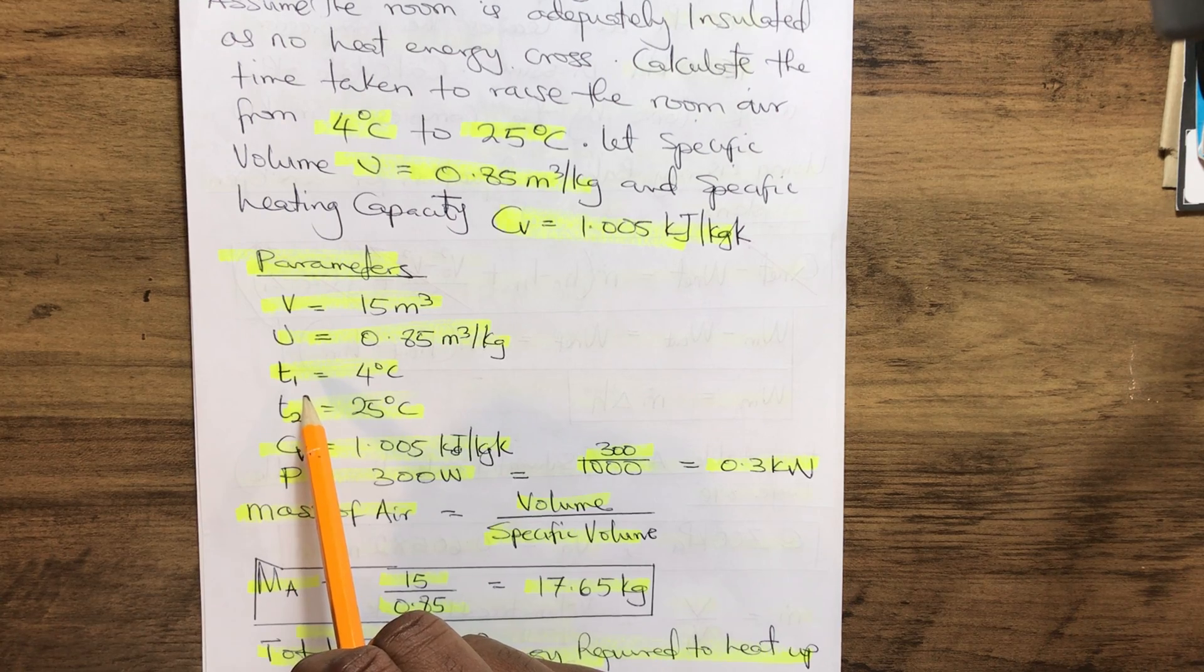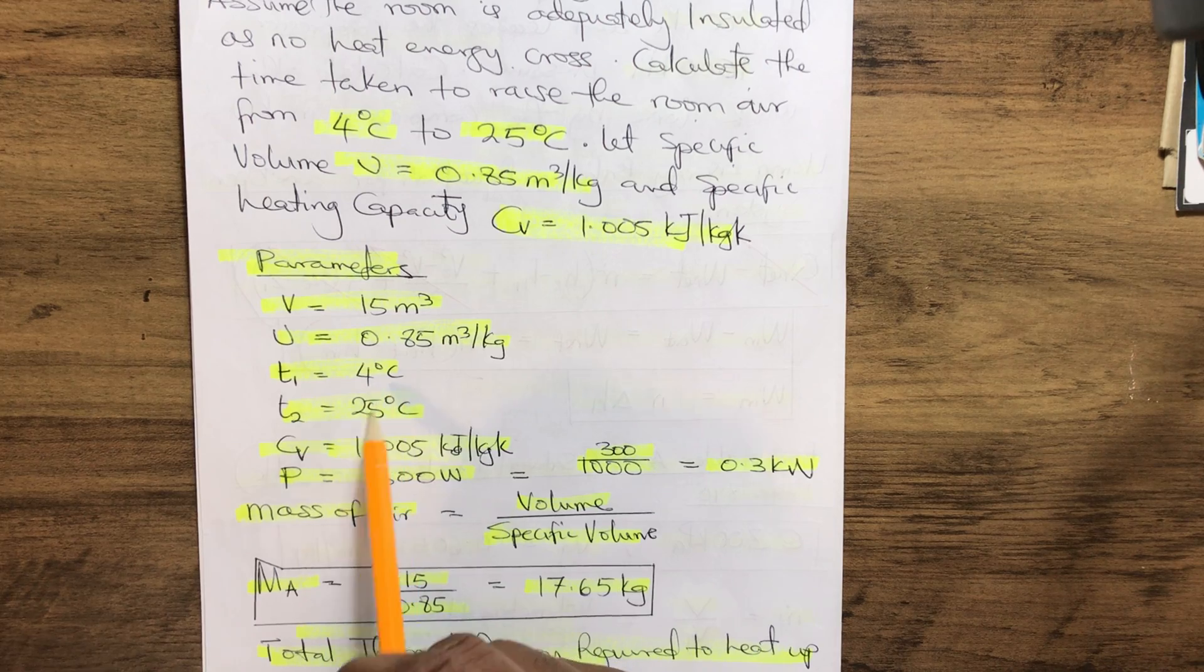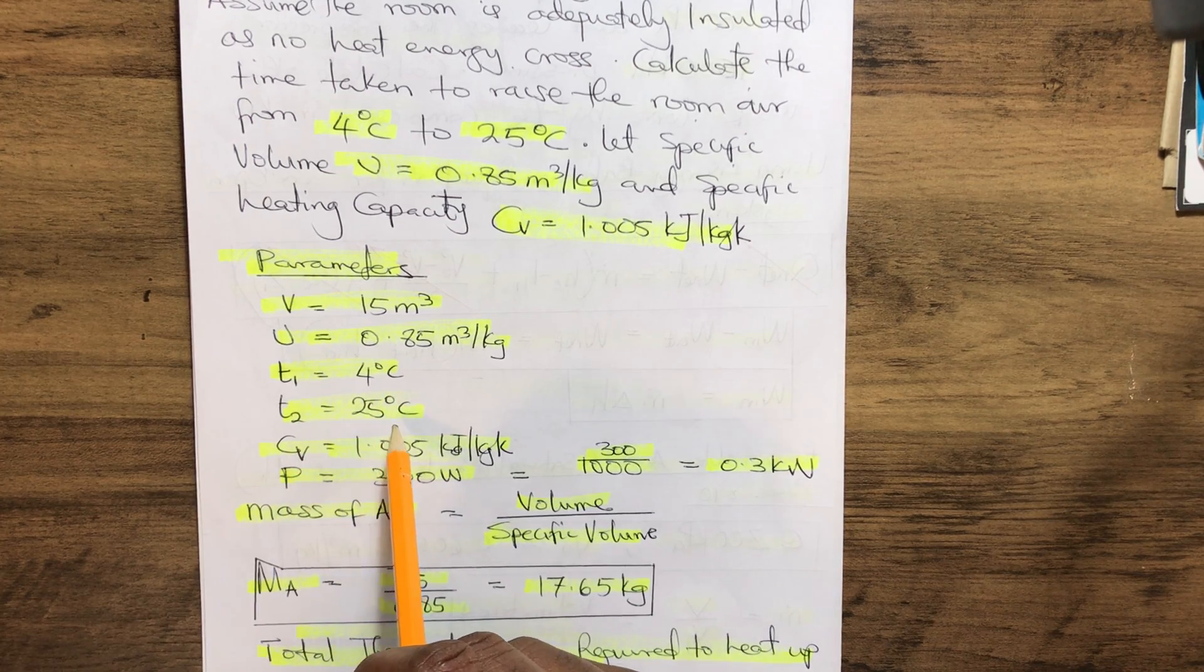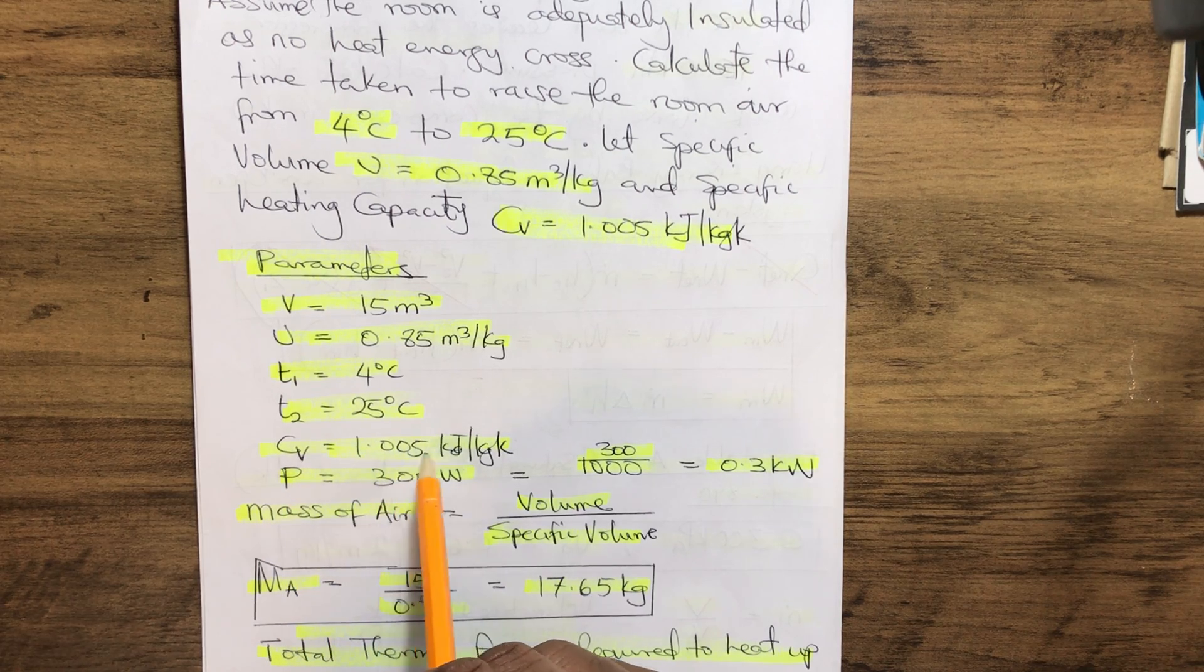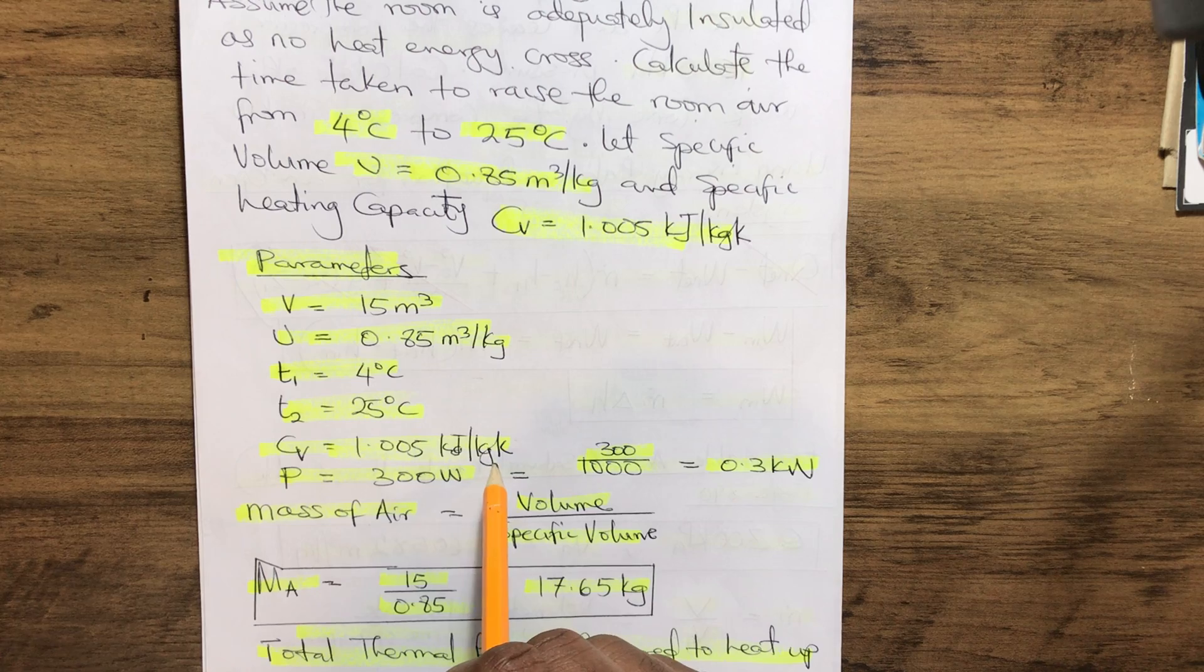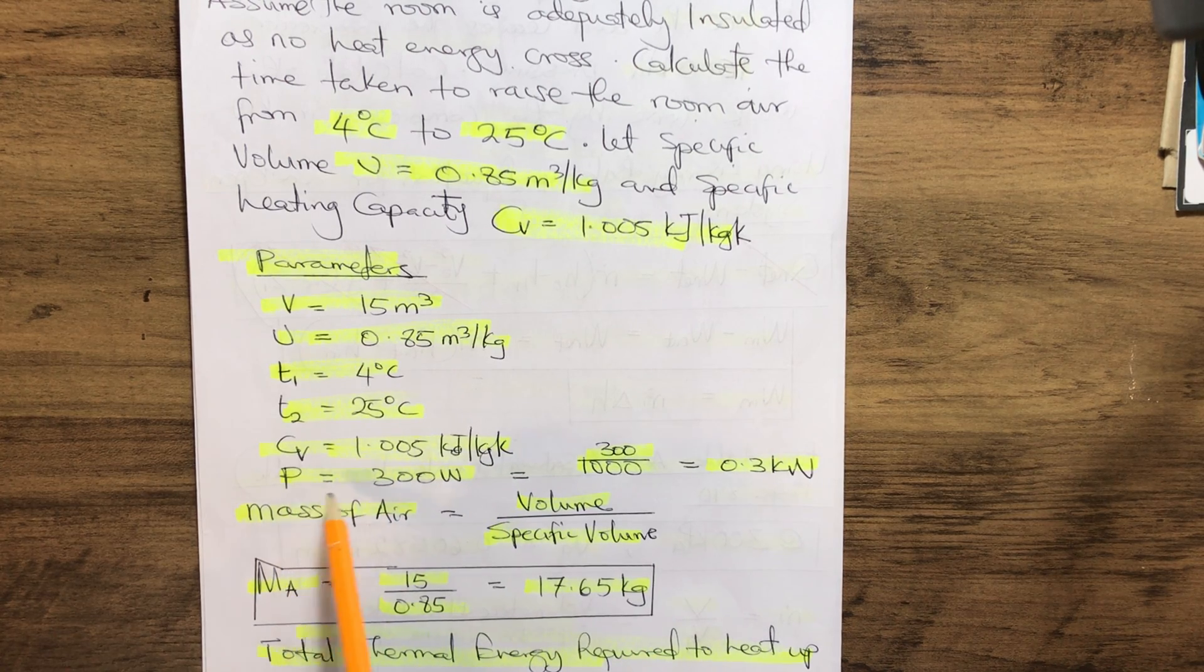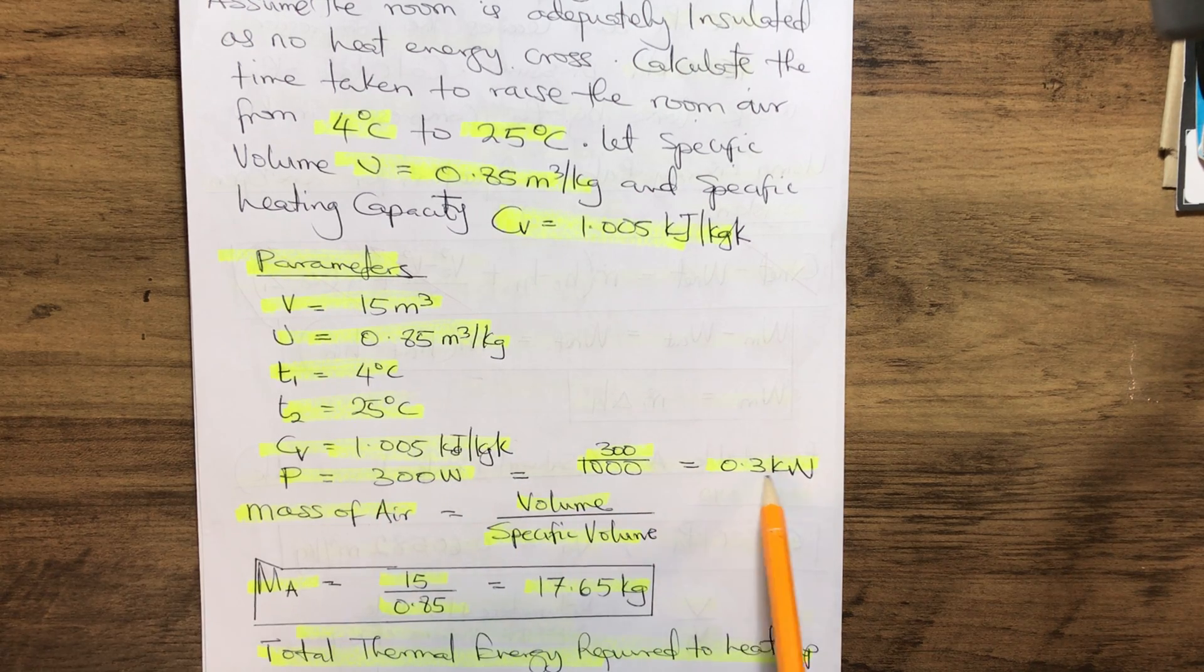Our initial temperature is 4 degrees Celsius, final temperature is 25 degrees Celsius, Cv is 1.005 kilojoules per kilogram kelvin, and the power or energy release is 0.3 kilowatts.